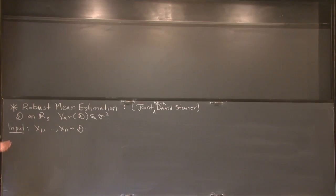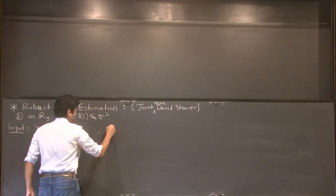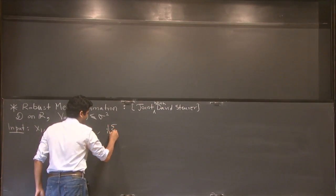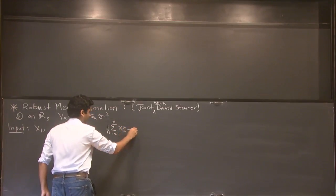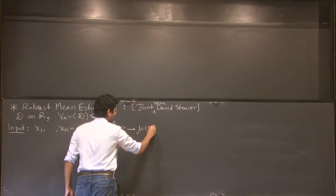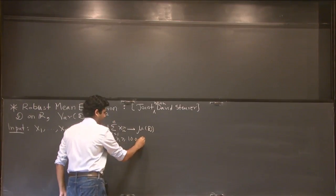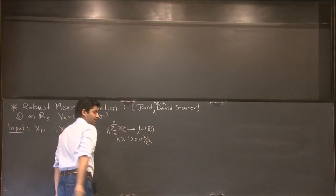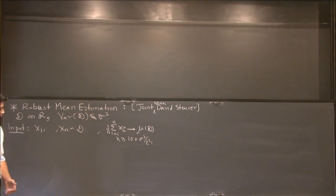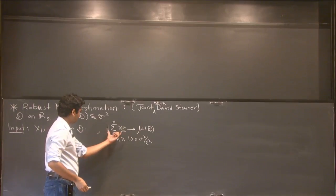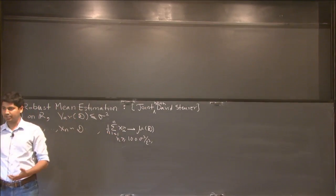This is very easy. We know that if I just average the samples or take the empirical mean, then the empirical mean converges to the true mean. In fact, I can give you rates. If N is larger than 100 times sigma squared over epsilon squared, then with 99% probability over the draw of the IID sample, my estimate of the mean using this empirical mean as the estimator is going to be epsilon additively accurate.